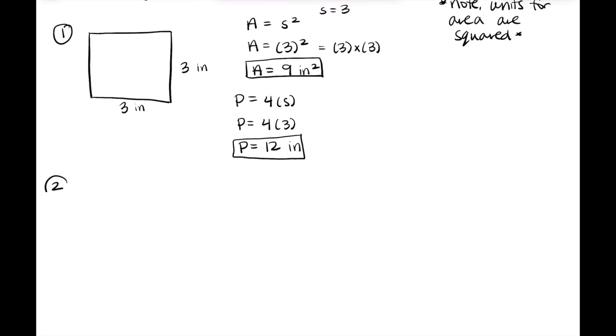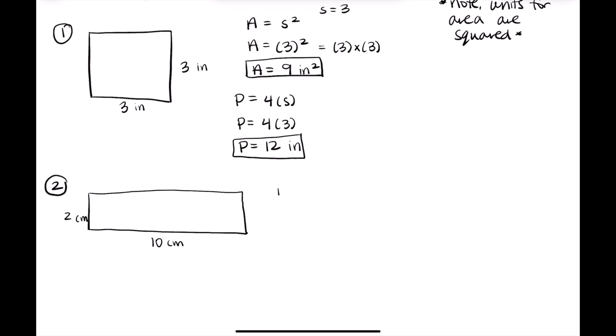Now we'll move on to number two. For number two, the shape we have is a rectangle. So try to see if you can remember those equations before I write them out. The dimensions we have here, our base is 10 and our height is two centimeters. So area is base times height for a rectangle. And we know that our base is 10 and our height is two. So we can substitute that in.